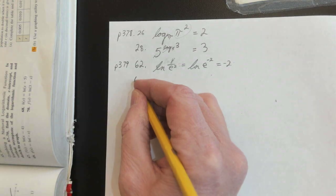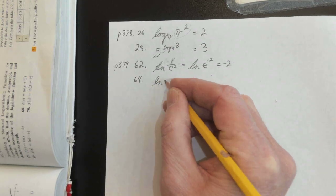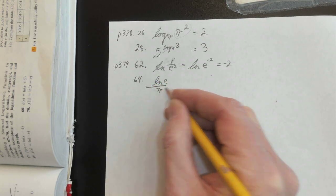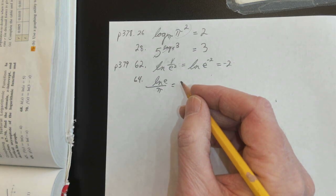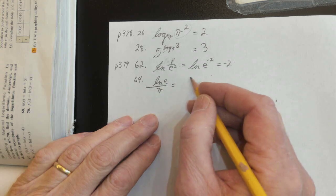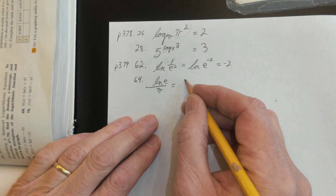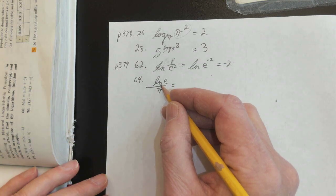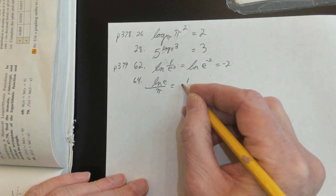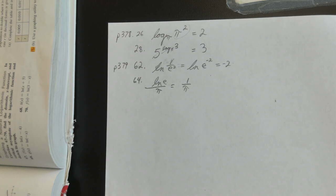Number 64 — we're just simplifying. Natural log of e over pi. Now, natural log of e — what's that equal? Natural log of e is log base e of e to the first power. Julia? That is 1. So, simplified, that's 1 over pi. Natural log of e is 1.